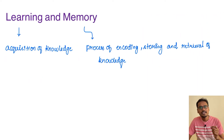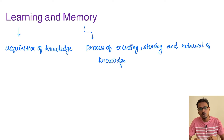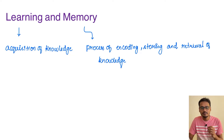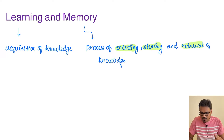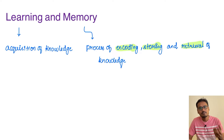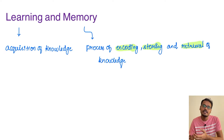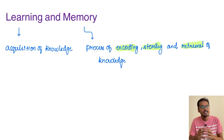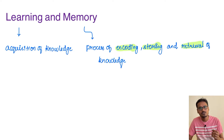What is learning? Learning is nothing but the acquisition of knowledge. Suppose you read something and try to acquire some knowledge — that is called learning. Then what is memory? You are able to encode this learning process, store it in your brain, and finally retrieve it. For example, you read something today and appear for an exam. Whenever you read something, it gets encoded and stored in the brain, and if you are able to retrieve and reproduce it in the examination, that is called memory.